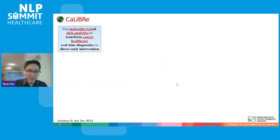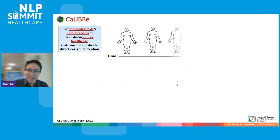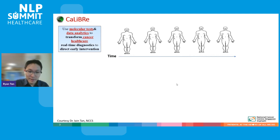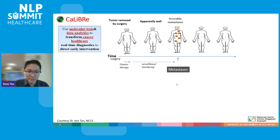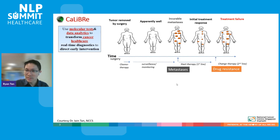At cancer centres, like most academic institutions, we are working towards precision medicine in cancer. Using one particular research programme as an example, we're trying to profile the patient's journey longitudinally by accurately capturing all the important time points — starting from when they were first diagnosed, were apparently well, and in some cases, unfortunately, the disease may have come back at a certain time point, undergone some treatment with responses, and eventually sometimes reaching treatment failure.